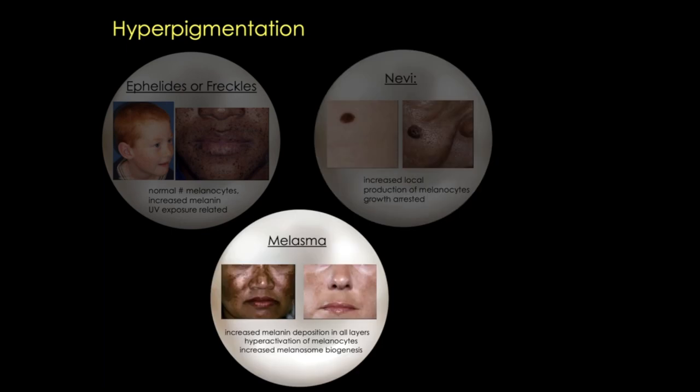Next, we have melasma—an acquired hyperpigmentary disorder characterized by light to dark brown macules and patches occurring in sun-exposed areas of the face and neck. The major etiological factors are genetic influence, exposure to UV radiation, and sex hormones. Often you'll see pregnant persons with melasma.